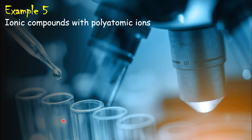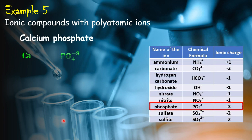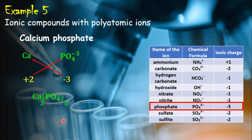Let's look at another example: calcium phosphate. The symbol of calcium is Ca and phosphate is PO₄³⁻. The charge of calcium is plus two since it is in group two of the periodic table, and the charge of PO₄ is minus three. Switching the charges and writing the formula gives Ca₃(PO₄)₂. The overall charge of calcium is plus six and the overall charge of PO₄ is minus six, so the compound is chemically neutral.